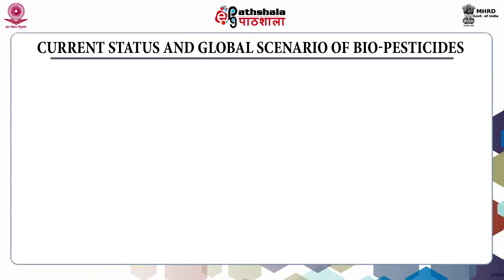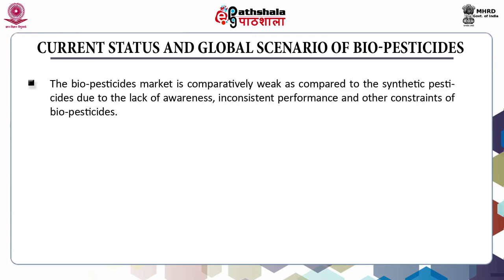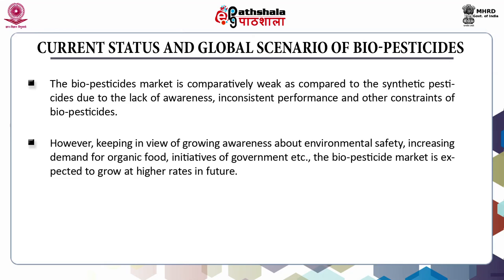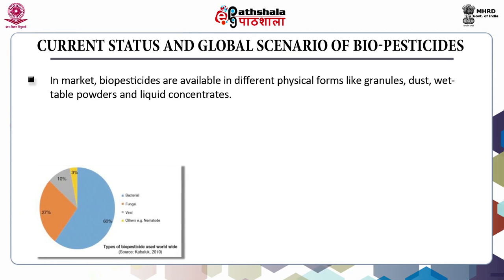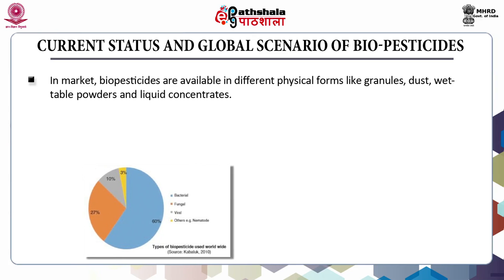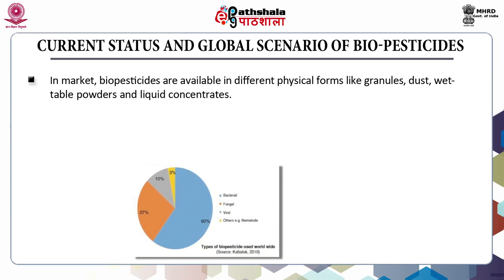Now we will discuss the current status and global scenario of biopesticides. The biopesticides market is comparatively small compared to synthetic pesticides due to lack of awareness, inconsistent performance and other constraints. However, keeping in view the growing awareness about environmental safety, increasing demand for organic food and government initiatives, the biopesticide market is expected to grow at higher rates in future. Currently, global use of biopesticides has been reported to grow at a rate of 10% annually with a production rate of 3000 tonnes per annum. In market, biopesticides are available in different physical forms like granules, dust, wettable powders and liquid concentrates.